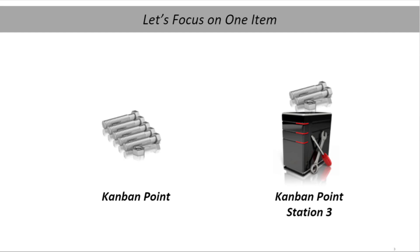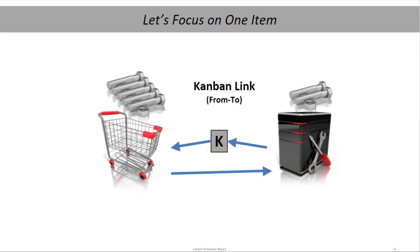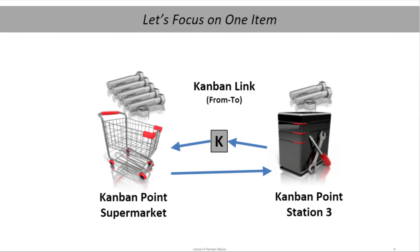The location from which you'll be getting more is also a Kanban point. Let's now see how the materials at Workstation 3 can be replenished using a simple Kanban method. The location in this example, from which we will replenish materials consumed at the line, we call a Kanban supermarket. The supermarket is a physical storage location near Station 3, which contains a larger quantity of the same nut and bolt set. At first glance, the supermarket may look like a staging area.